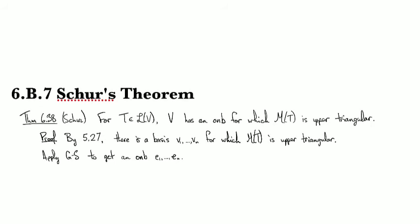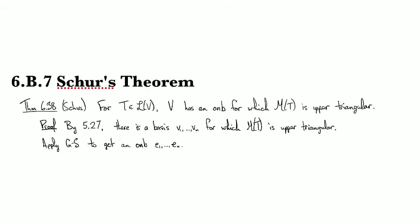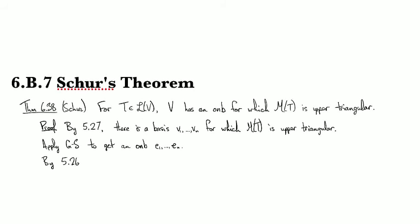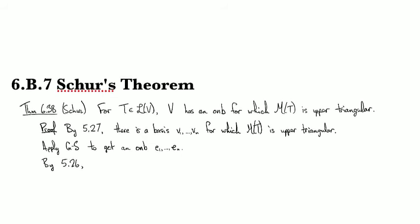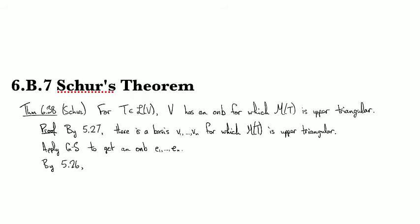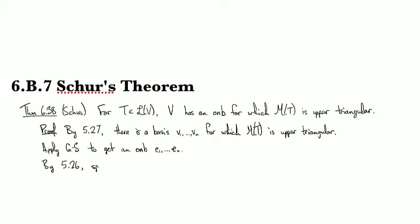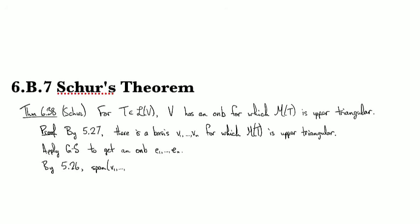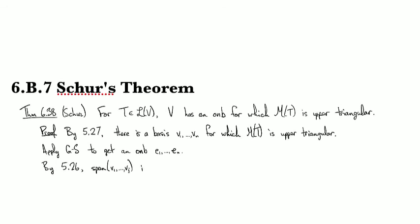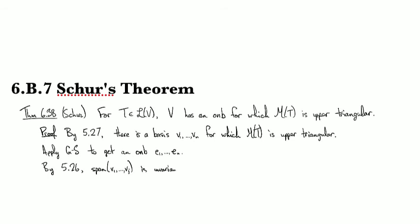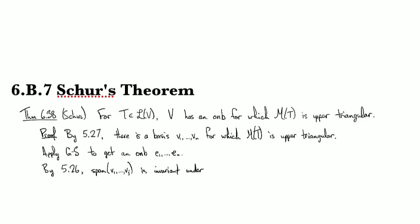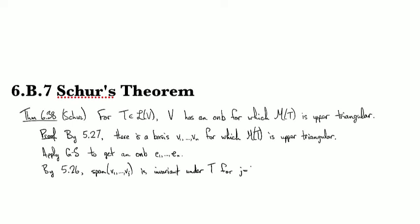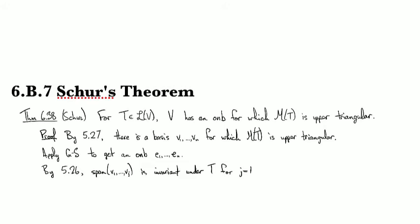That theorem I mentioned just a moment ago — theorem 5.26 — says that M(T) is upper triangular for this basis if and only if the span of v₁ through vⱼ is invariant under T, for j equals 1 through n.